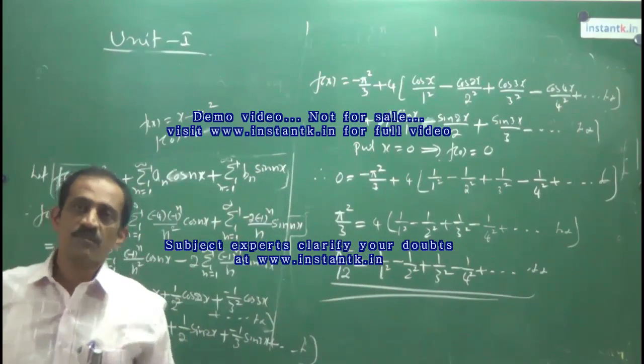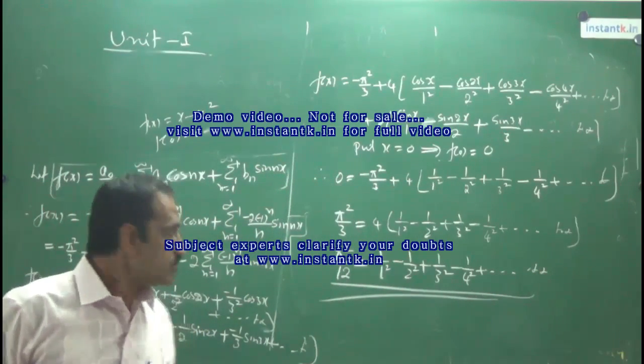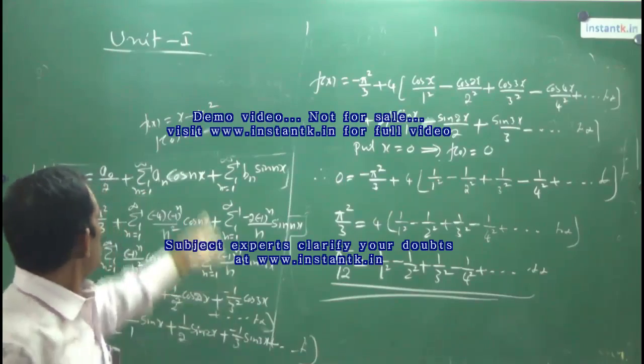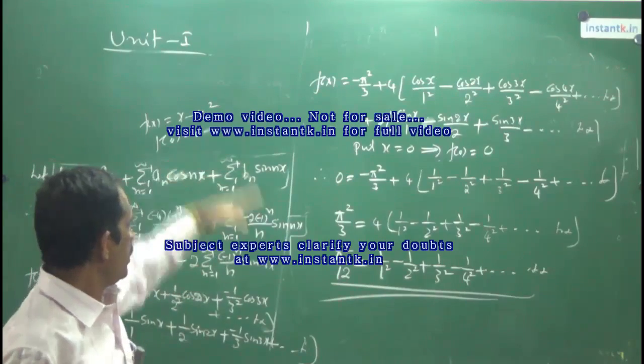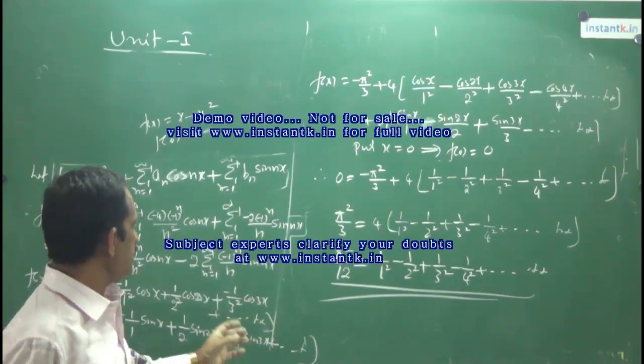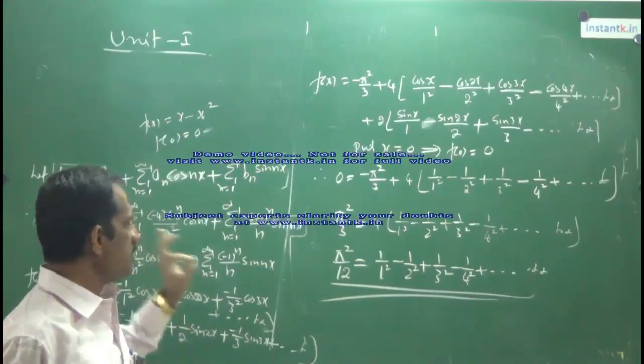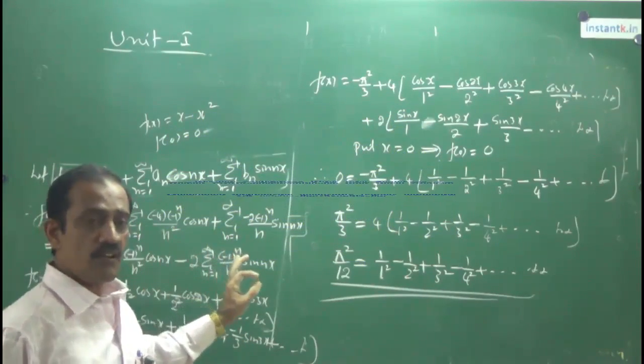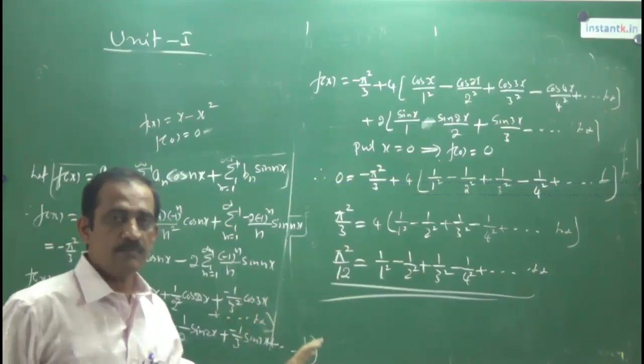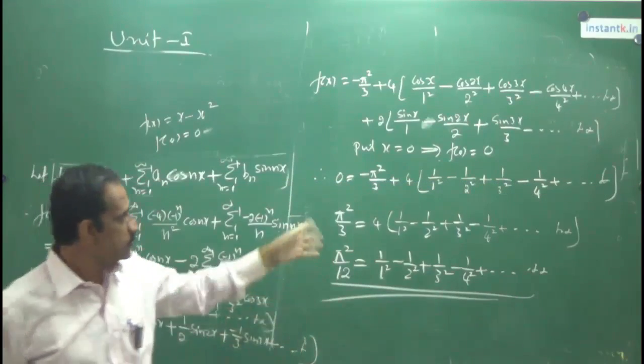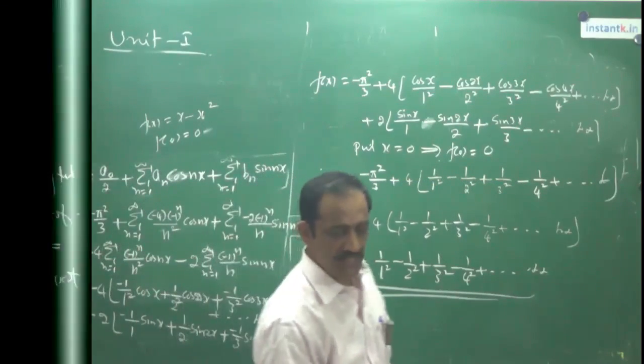This is the Fourier series for the given function. In summary: first get the constants A₀, Aₙ, and Bₙ, substitute them into the general series, and then, depending on the deduction required, substitute an appropriate value of x.